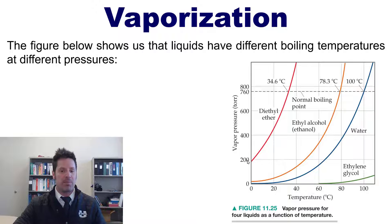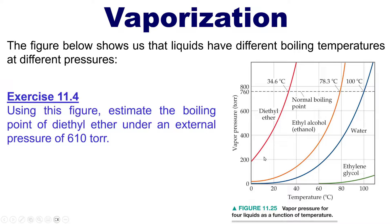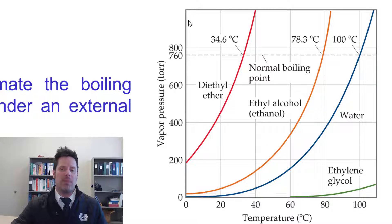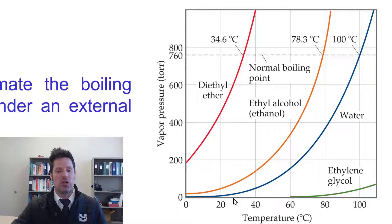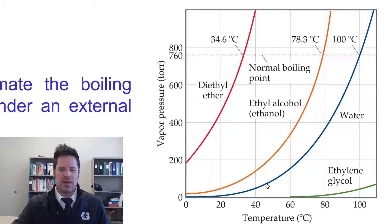This figure from our text shows that liquids have different boiling temperatures at different pressures. The y-axis shows vapor pressure and the x-axis shows temperature. As an example, to estimate the boiling point of diethyl ether under an external pressure of 610 torr, we find 610 torr on the y-axis, trace over to intersect the diethyl ether curve, then go down to the x-axis. The temperature of intersection is somewhere around 25–28°C, so at 610 torr, diethyl ether would start to vaporize at approximately 25–28°C.